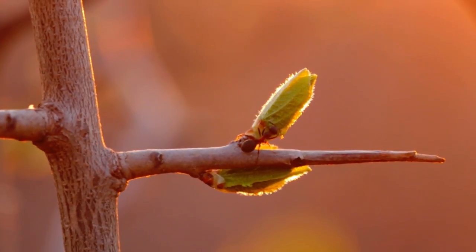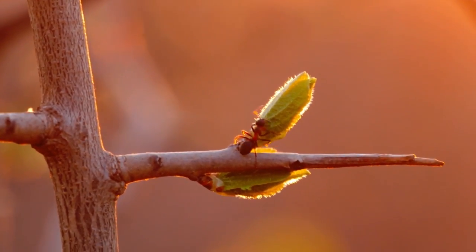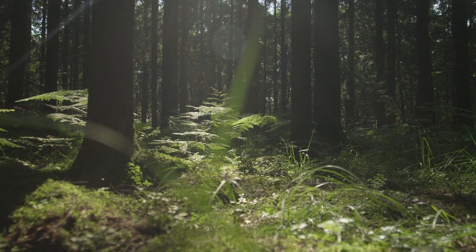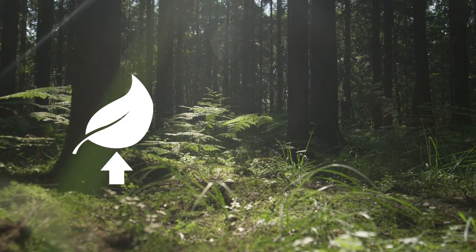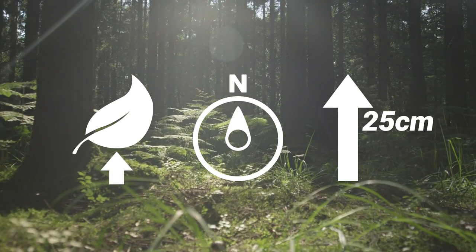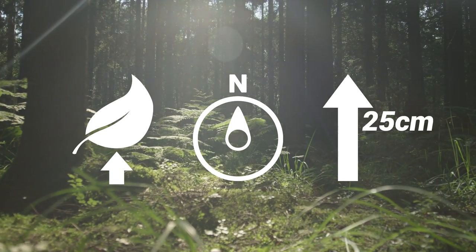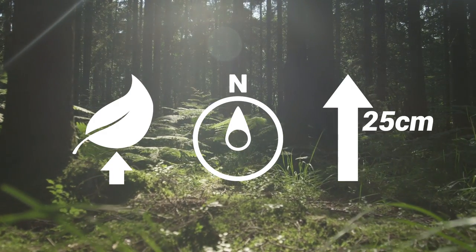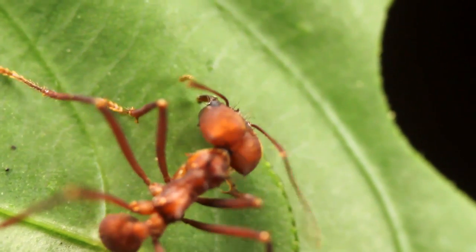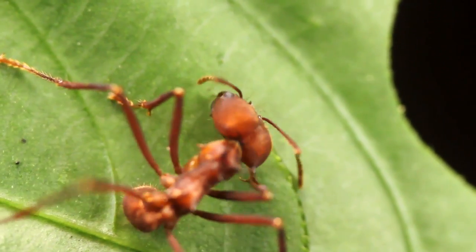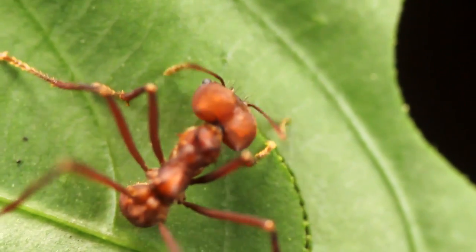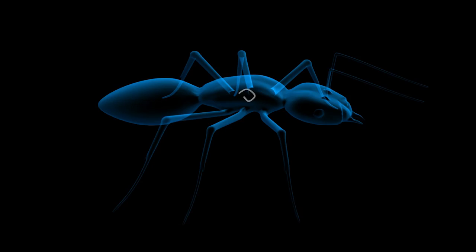The fungus is looking for a very specific location: the underside of a leaf on the northern side of the plant, at a height of around 25 centimeters from the forest floor. Once it has found this oddly specific location, it will manipulate the ant to bite down hard onto the main vein of the leaf, securing it to the plant.